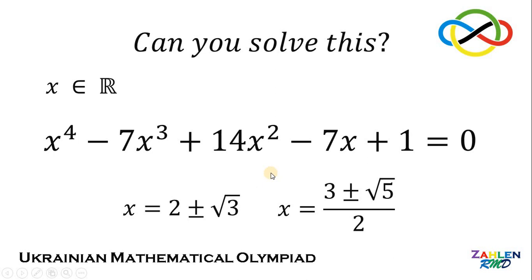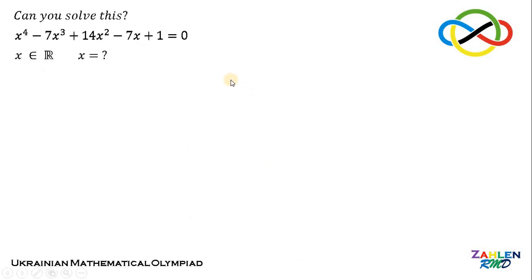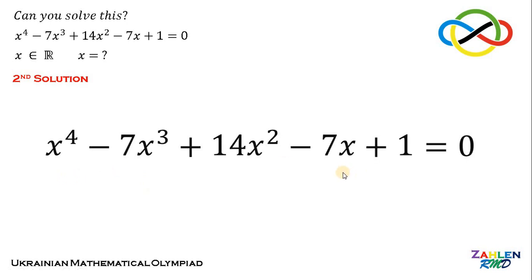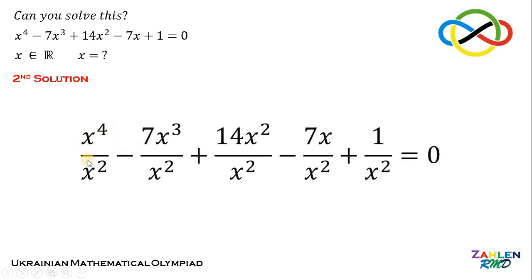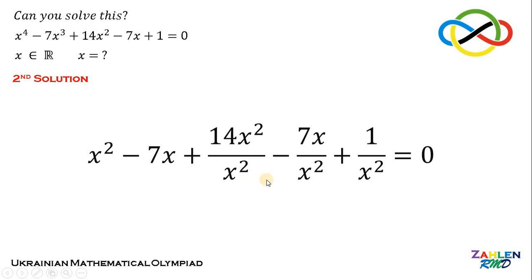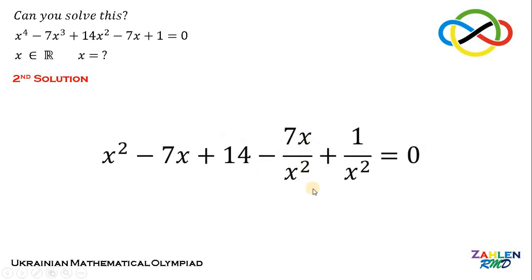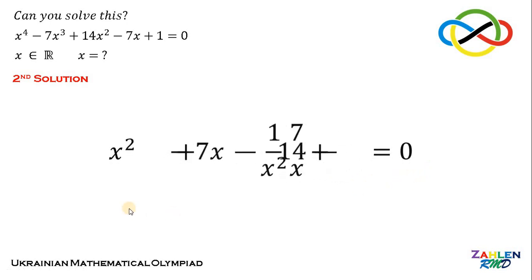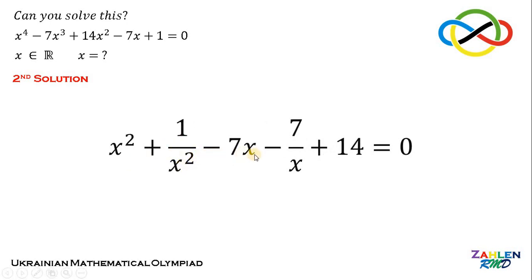To double-check, let's use our second solution, which considers the symmetry of the equation. We divide all terms by x squared. Simplifying: x^4 over x^2 is x^2, negative 7x^3 over x^2 is negative 7x, 14x^2 over x^2 is 14, negative 7x over x^2 is negative 7 over x, and 1 over x^2 remains. So we have x squared plus 1 over x squared minus 7x minus 7 over x plus 14 equals 0.